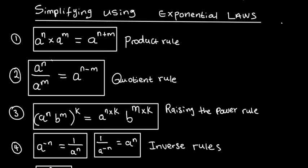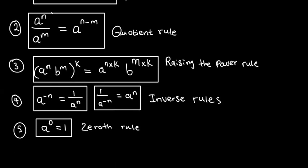Then you have the inverse rule, which basically means any number with a negative exponent can be written as the inverse of itself with a positive exponent. And lastly, the zeroth rule: any number with an exponent of zero is equal to one.